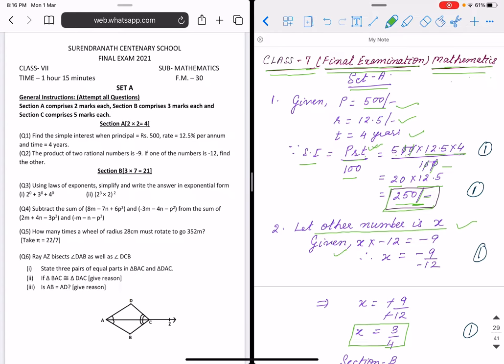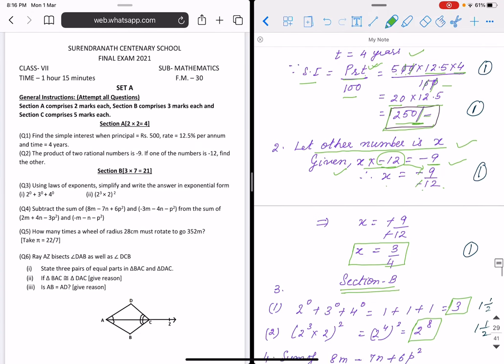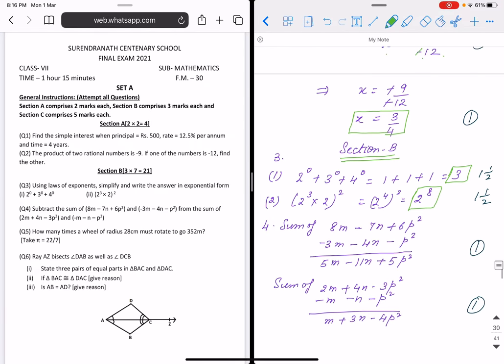The product is minus 9. So X into minus 12 will be minus 9. X will be minus 9 divided by minus 12. When we take from that side, multiplication sign changes to division. Minus 9 by minus 12, if you cancel, it is 3 by 4. Again I am writing answer in rectangular box. You also write same way, draw a line after each question.